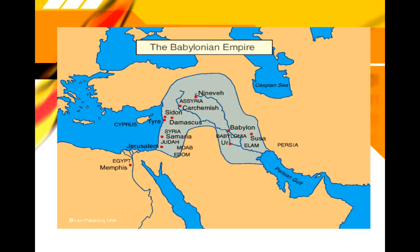The empire of the Babylonians was extensive. You can see here that it covers the full area of the Fertile Crescent, though not extending into Egypt as other empires had done. You can see the extent and the main cities, with Babylon located right in the center of the Tigris-Euphrates River Valley.